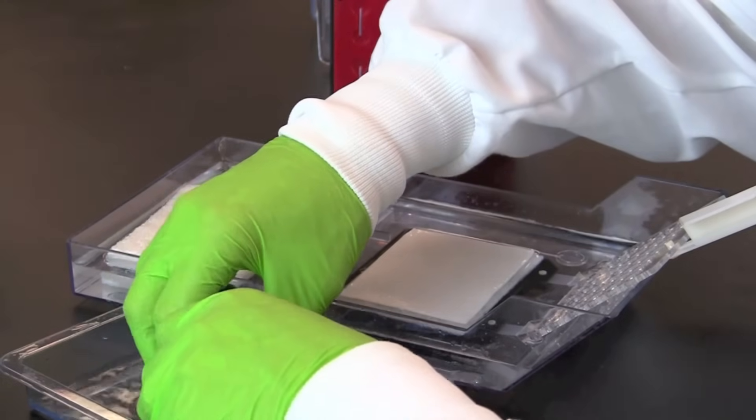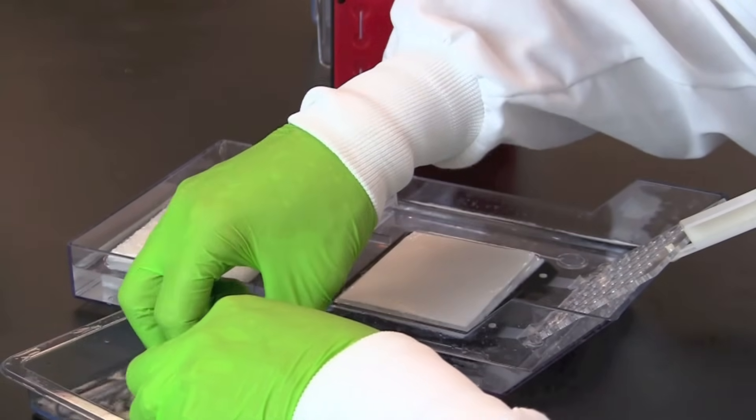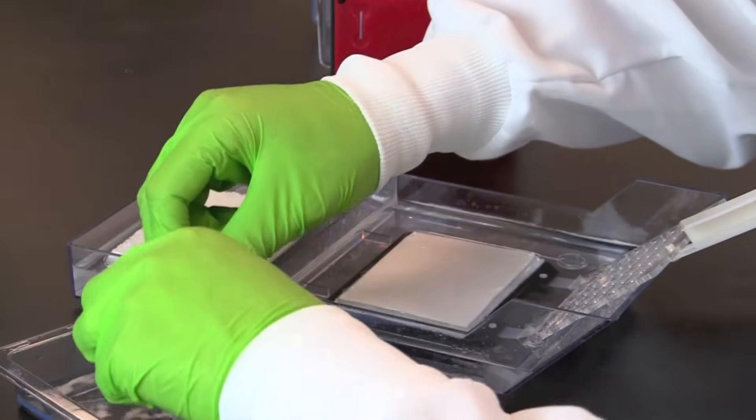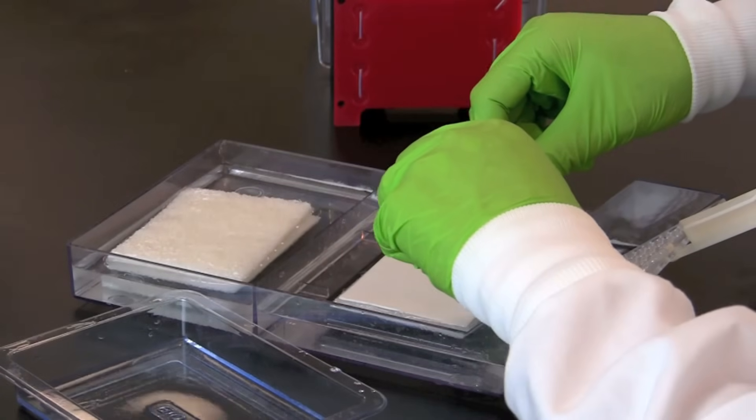Take the gel and carefully place it squarely onto the blotting paper. Again, being careful to avoid any bubbles between the gel and the blotting paper.